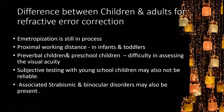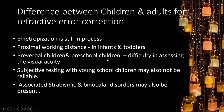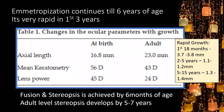Why is refractive error correction more challenging in children than adults? The main issue is emmetropization, which is still active. Working distance for infants and toddlers is much shorter. Visual acuity assessment is difficult in pre-verbal and preschool children — picture charts are available but reliability of answers is questionable. Associated strabismic and binocular disorders also need to be tackled since the visual cortex is still plastic.